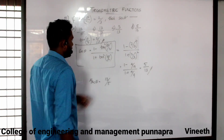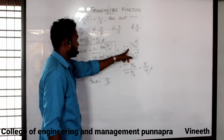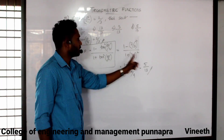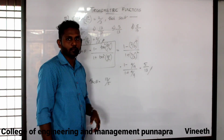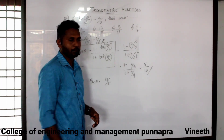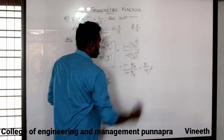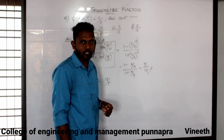So with 1 minus tan squared — using 1 minus (2/3)² over 1 plus (2/3)² — the answer is 5 by 13.